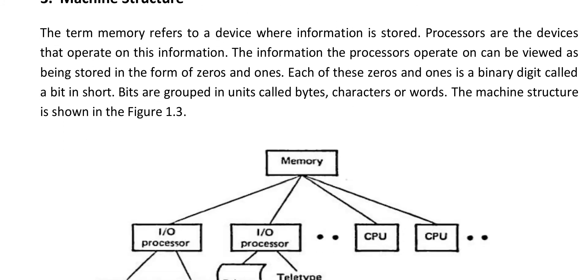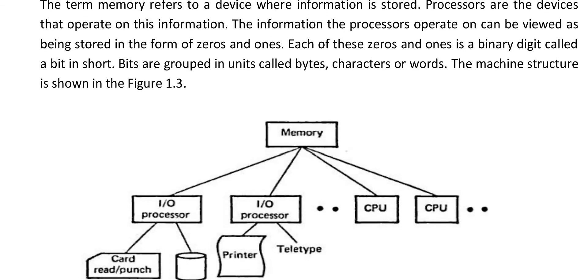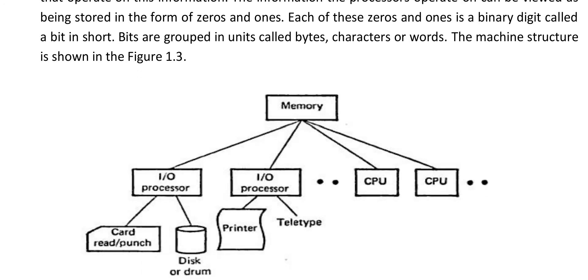Now let us learn about the machine structure. The term memory refers to a device where information is stored, and processors are the devices which operate on this information. The information the processor operates on can be viewed as being stored in the form of 0s and 1s. To understand the language of the user, which is a high-level language, we need various system softwares like compilers, assemblers, and other translators. Each 0 or 1 is a binary digit called a bit, and these bits can be grouped in units called bytes, characters, or words.